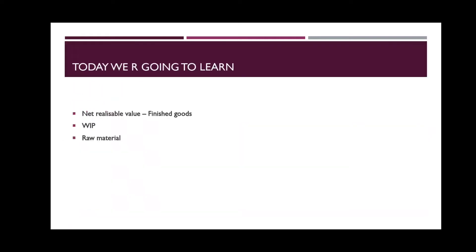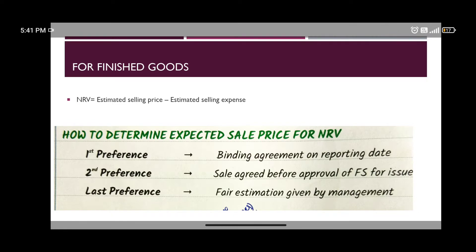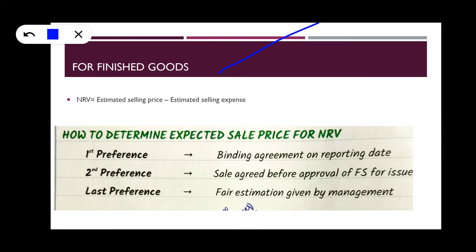Welcome to Heymanth's YouTube channel. Today we are going to learn Net Realizable Value. We know inventory is valued at cost or NRV, whichever is lower. In previous videos we learned what cost means, so now we are going to learn Net Realizable Value — for finished goods, work in progress, and raw materials.